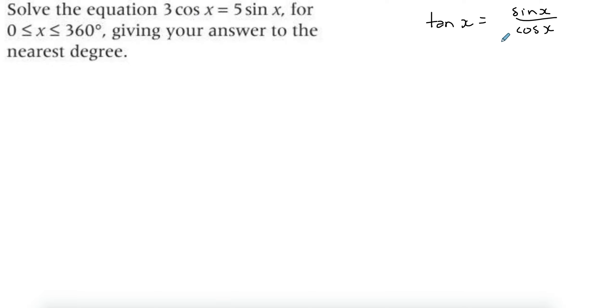What you can do is, if I could get sin x over cos x, then great, then I'll end up with one trigonometric function. Because right now I have two trigonometric functions. So if I divide this whole thing by cos x, 3 cos x divided by cos x, 5 sin x. And if I divide both sides by cos x, I end up with this becoming a tan.